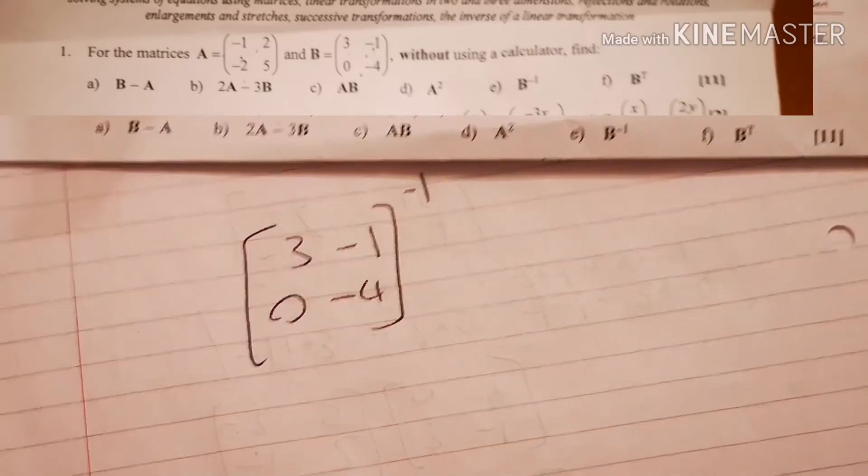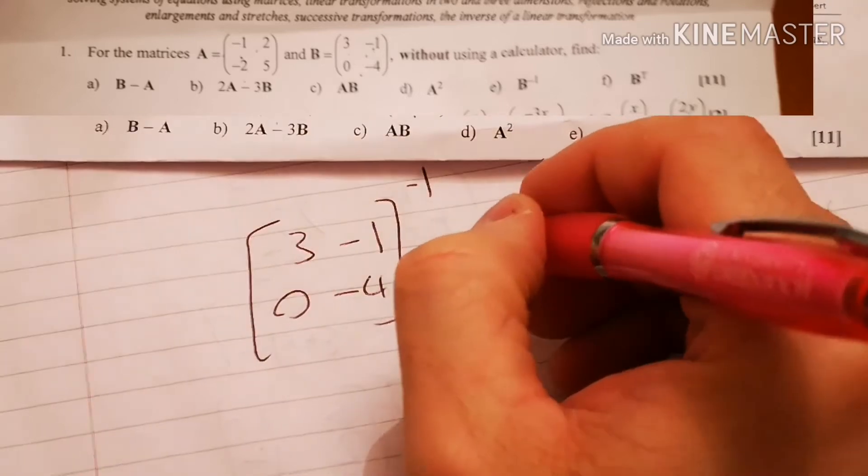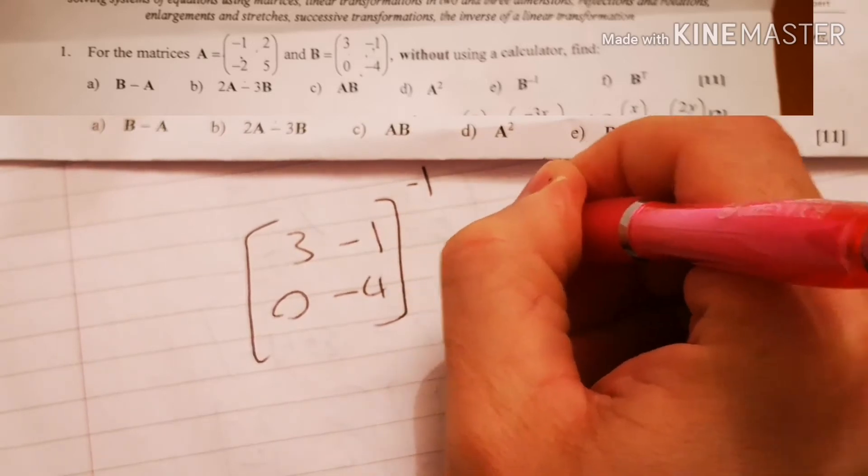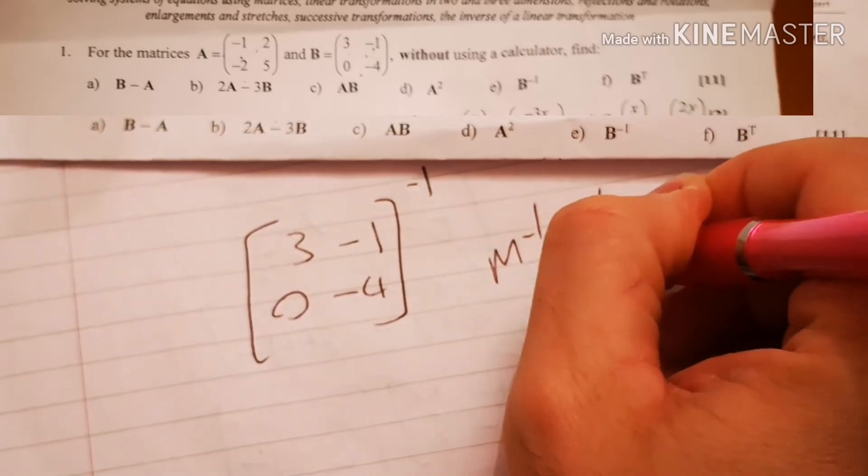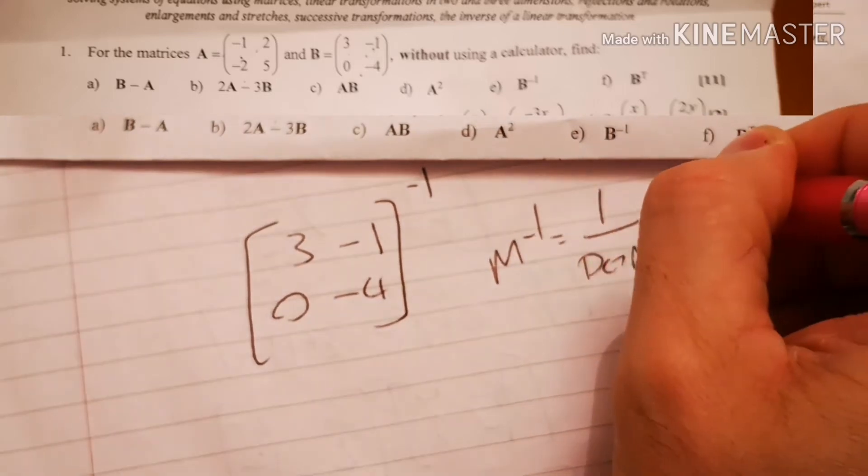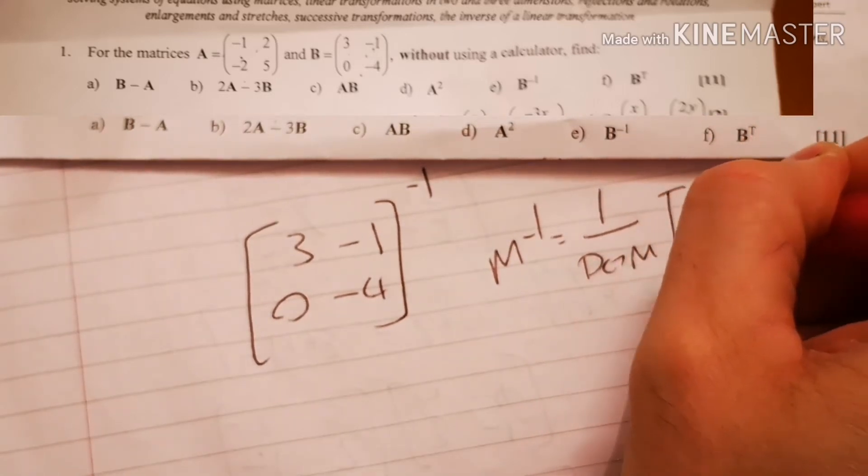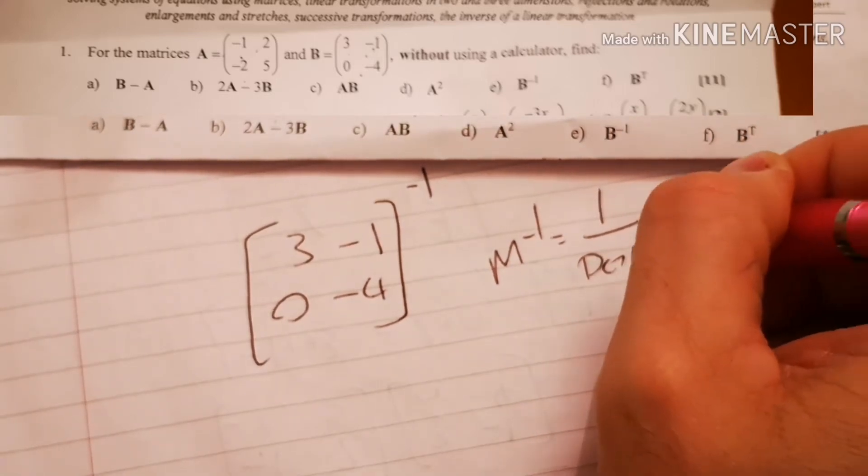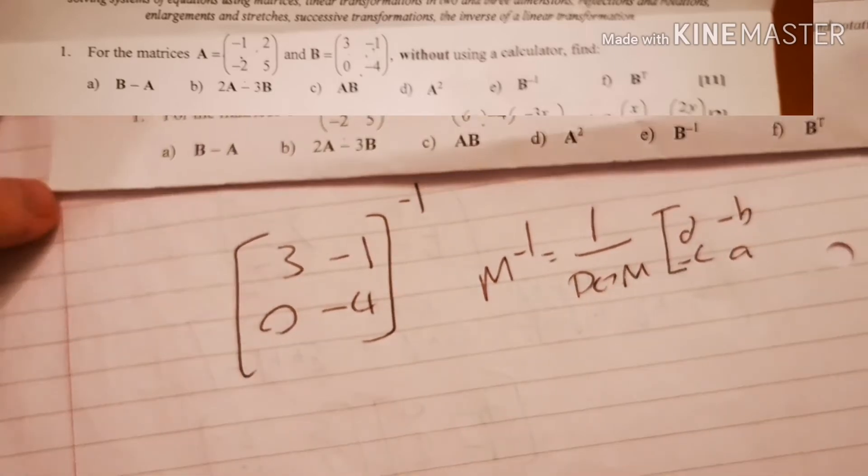So if I'm doing anything to the power of minus 1, what that actually means is I need to use a formula. Which is M to the power of minus 1 equals 1 over the determinant of M. And I need to change this as d, a, minus b, minus c. Okay.